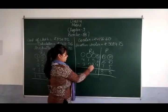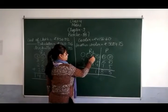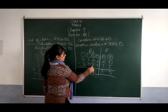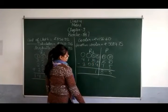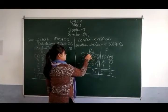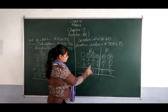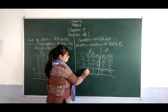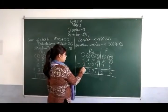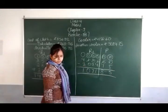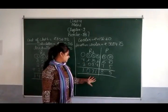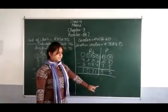5 में से 8 नहीं जाएंगे, तो 1 borrow करेंगे — 15 हो जाएगा। 15 में से 8 गए — 7 remaining। इसने 1 इसको दिया — यहाँ 0 हो गया। 0 में से 0 गए — 0। 4 में से 3 गए — 1। तो one thousand seventy-one rupees and eighty-five paise।